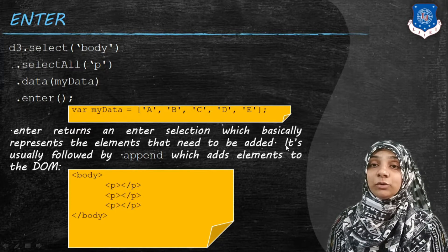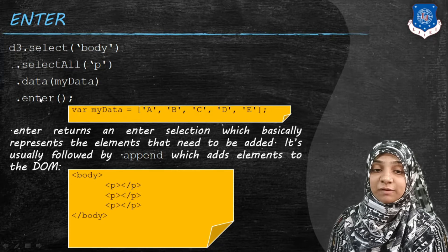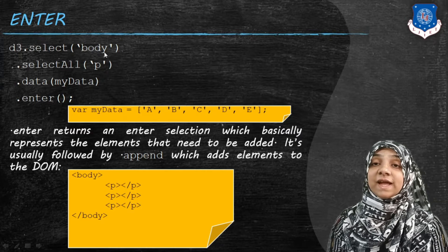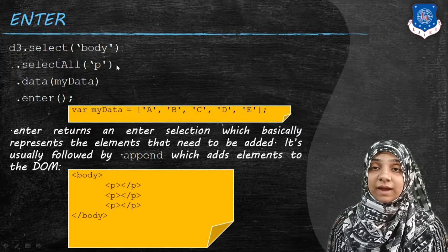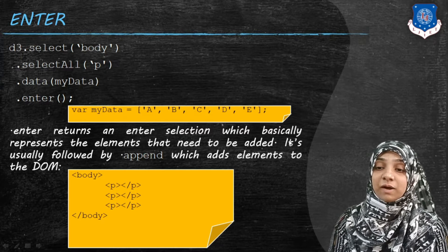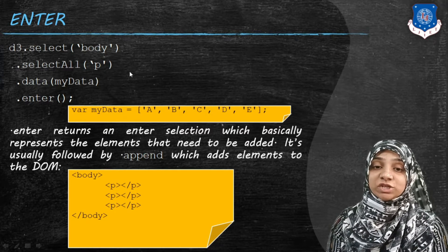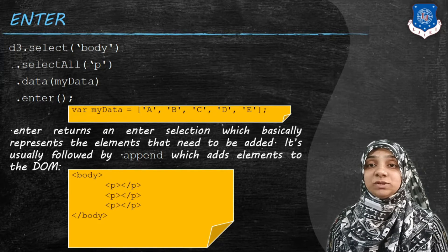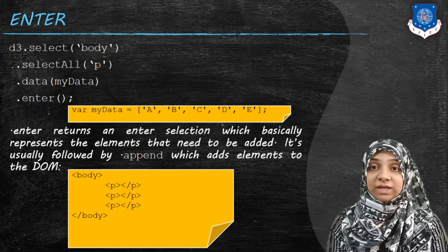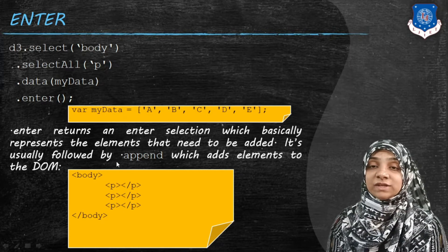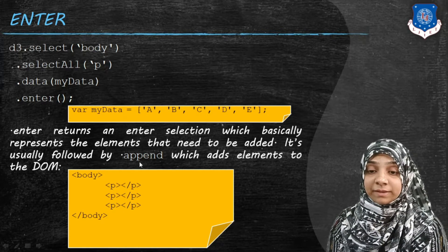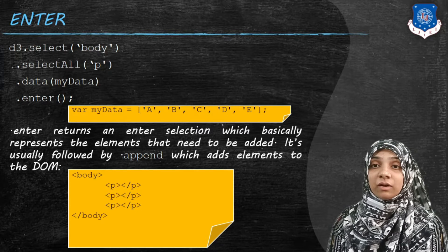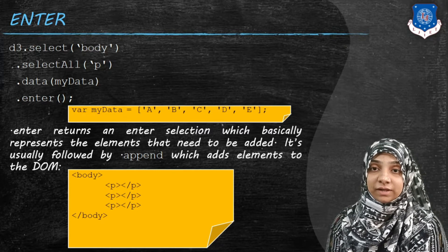Enter basically returns an enter selection which represents elements that need to be added. With the enter method, the system knows it needs the remaining two p tags to be added to our selection. After identifying the number of elements required, we need to actually add those elements to our DOM tree. New elements are added with the help of the append method, which adds an element to our DOM. We'll see the effect with enter and append, and the effect without them.